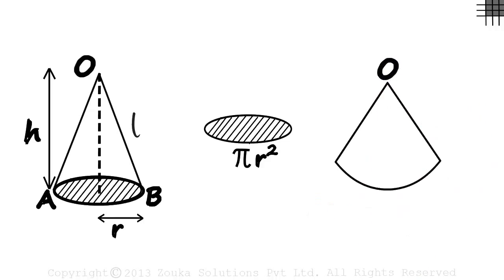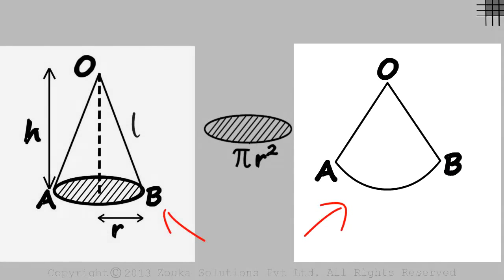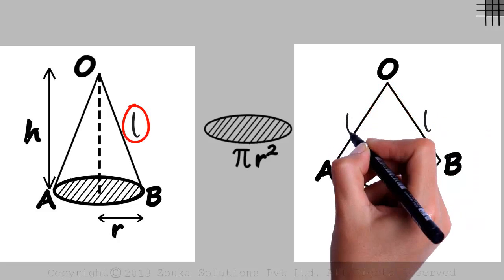Let the sector be O, A, B. Look at the sector and the cone. What do you think is the measure of these two lengths? O, A and O, B will equal the slant height which is L.